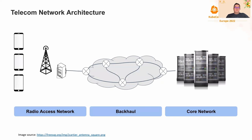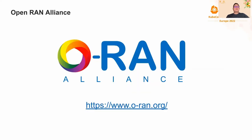A telco network is typically split into the core network, radio access network (RAN), and the backhaul — the infrastructure that connects the core and the RAN. While the core network was a relatively natural fit for cloudification, the radio access network was typically more rigid and hard to revolutionize. Yet people started looking at it in an attempt to align its implementation with cloudification trends. That's how, in 2018, the OpenRAN Alliance was born.